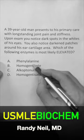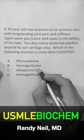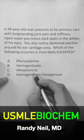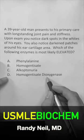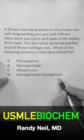Is it A, phenylalanine; B, homogentisate; C, alkaptonuria; or D, homogentisate dioxygenase?